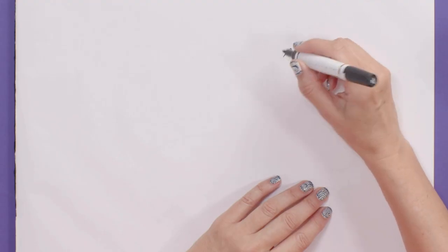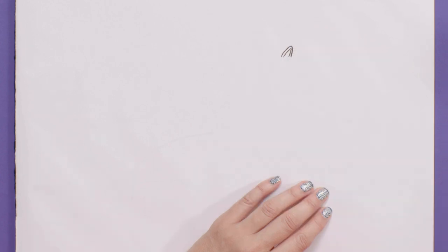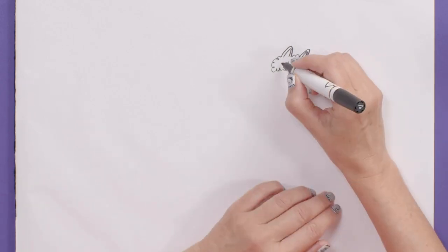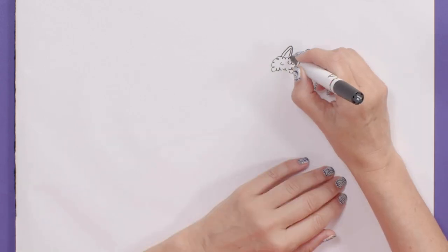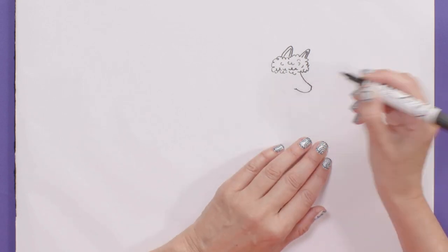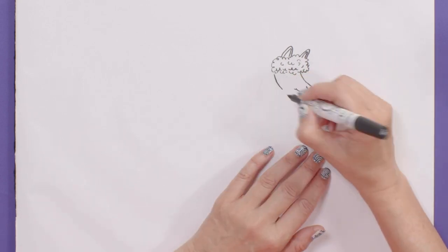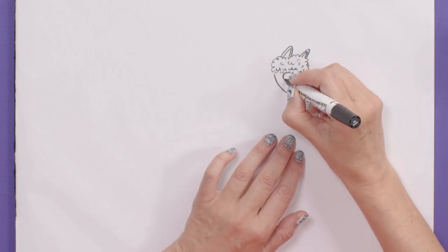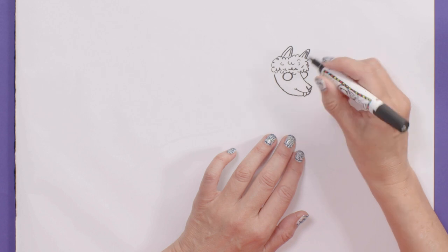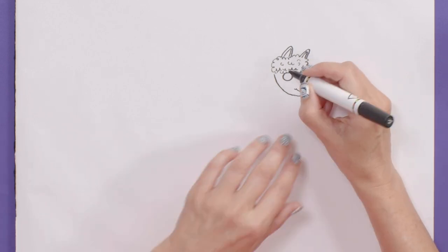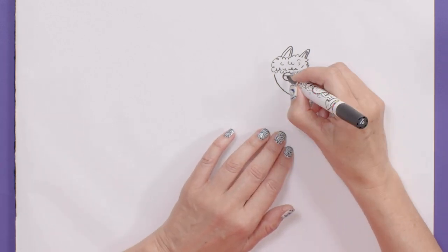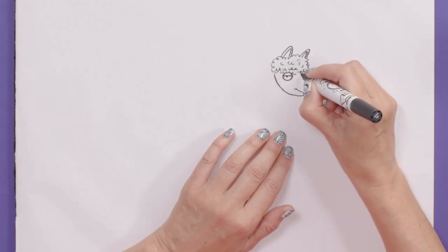This is my version of a llama. Doesn't look exactly like a llama. Llamas have got kind of really long ears. Llamas have got lots of wool on the top of their head. Do the nose. The nose is almost like a little triangle. I'm going to have the tongue poking out too. Got an eye on each side. I'm going to draw the eyelid going across. And they've kind of got quite long eyelashes as well.